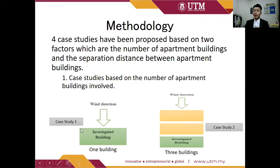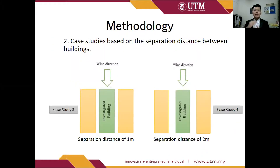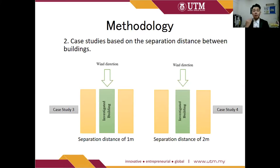Case study 1 involves a single building, and case study 2 involves three buildings where the investigated building is the last, third building. These two case studies investigate and compare the differences in wind behavior surrounding buildings when the number of buildings increases. Case study 3 has a separation distance of 1 meter, and case study 4 has a separation distance of 2 meters. For these two case studies, the investigated building is the building in the middle. These two case studies investigate and compare the differences in wind behavior when the separation distance between buildings increases.